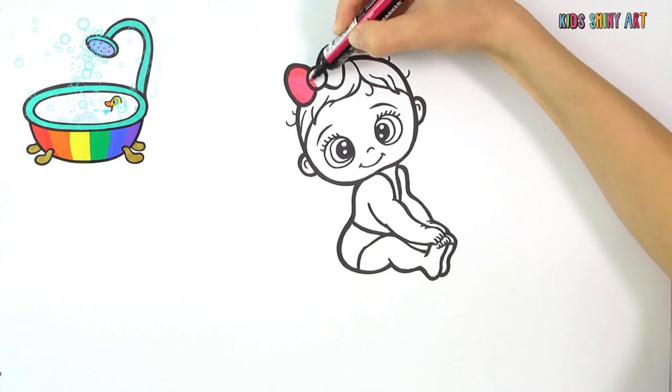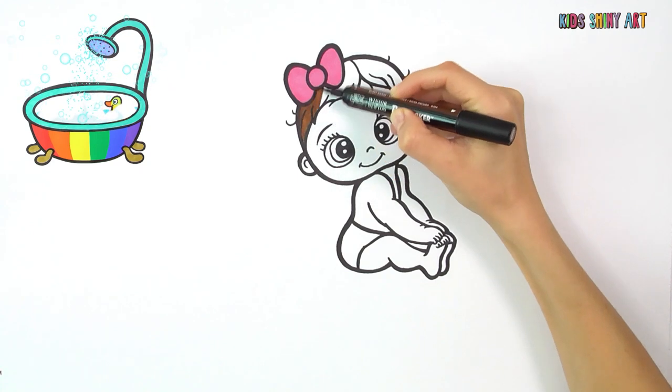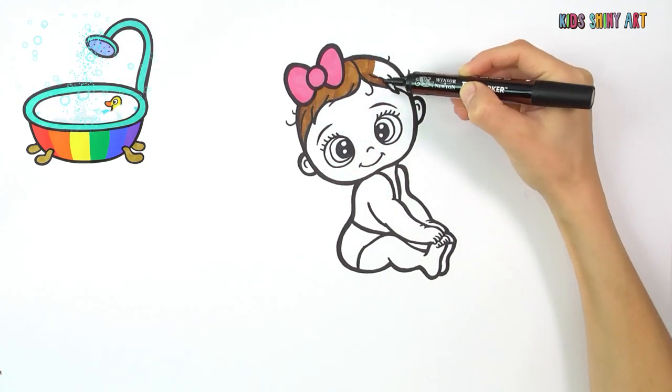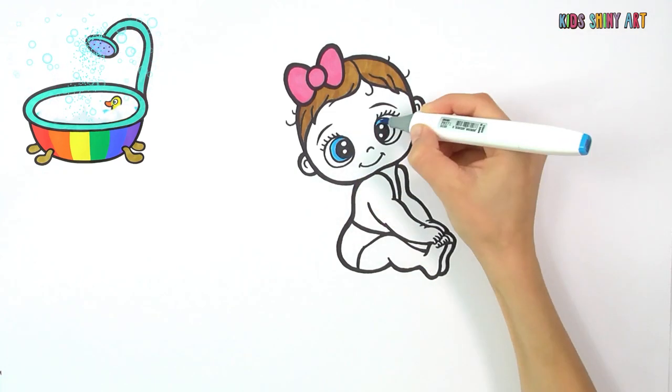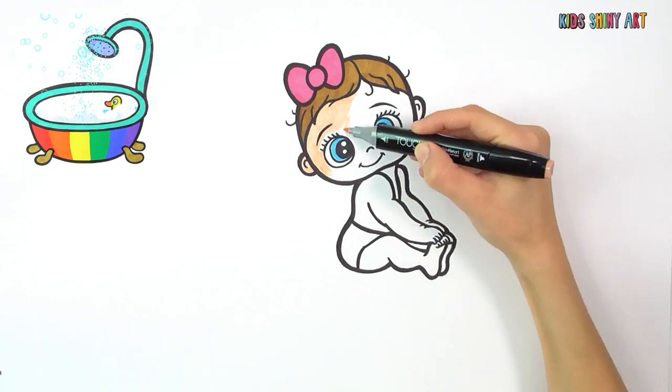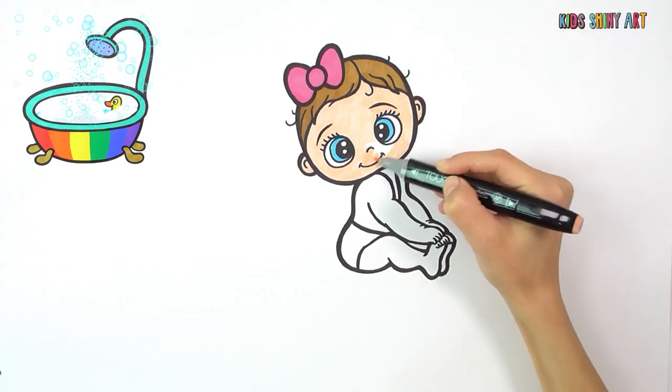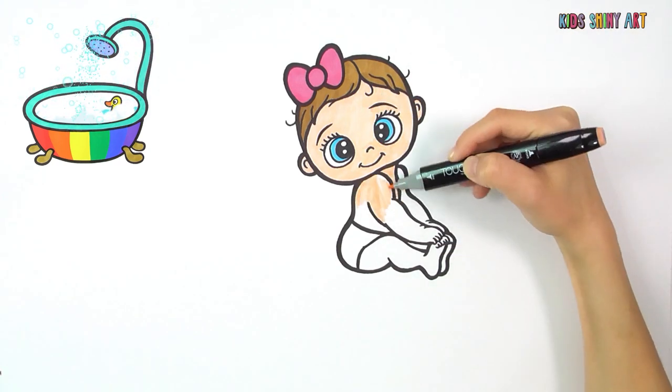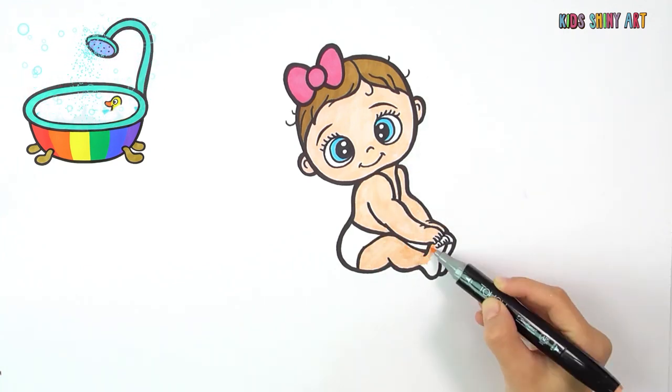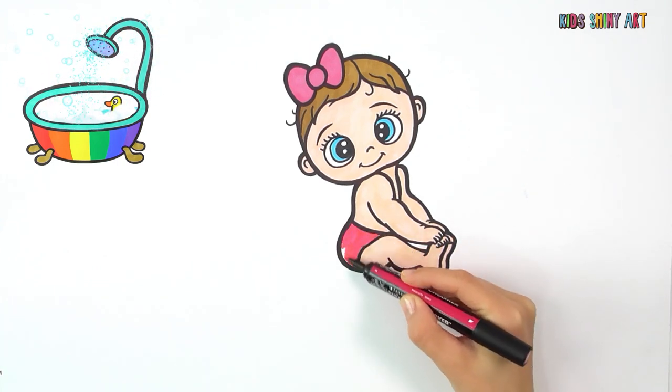Let's color her bow with pink and her hair with brown. Blue for her eyes and beige for her skin! Let's use pink for her diaper!